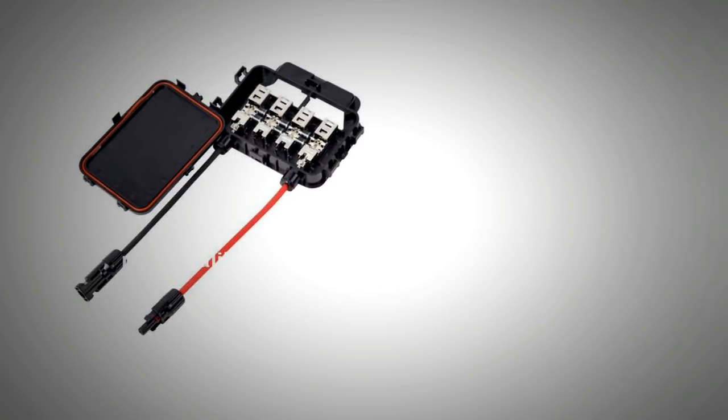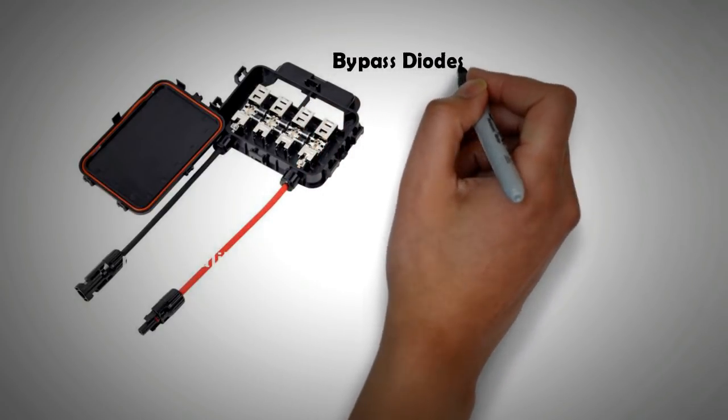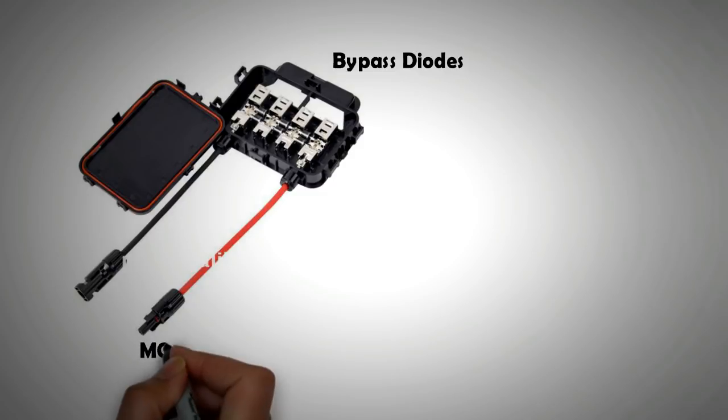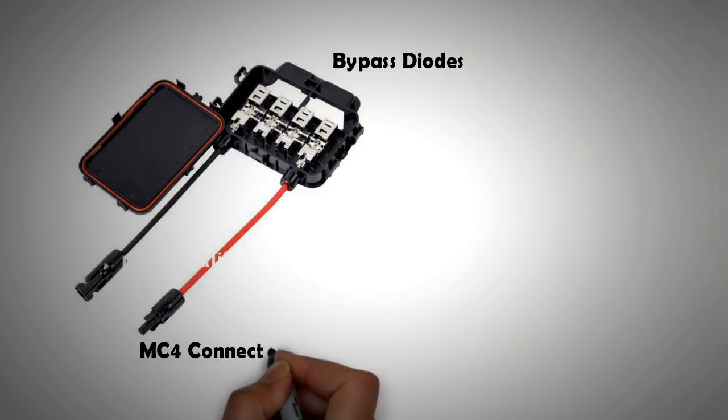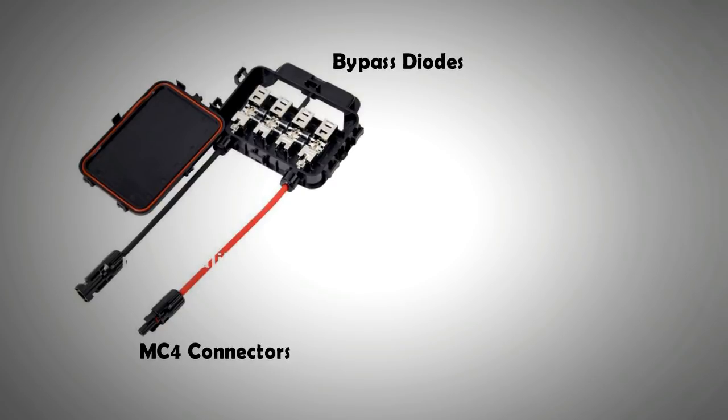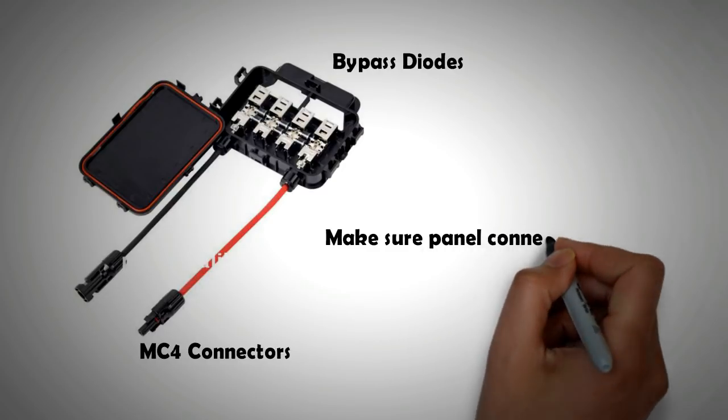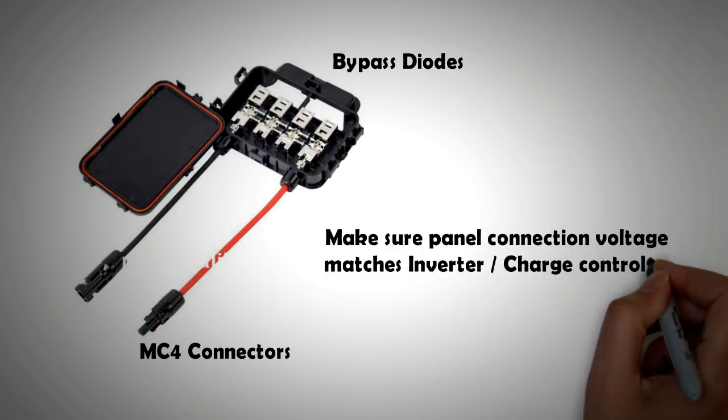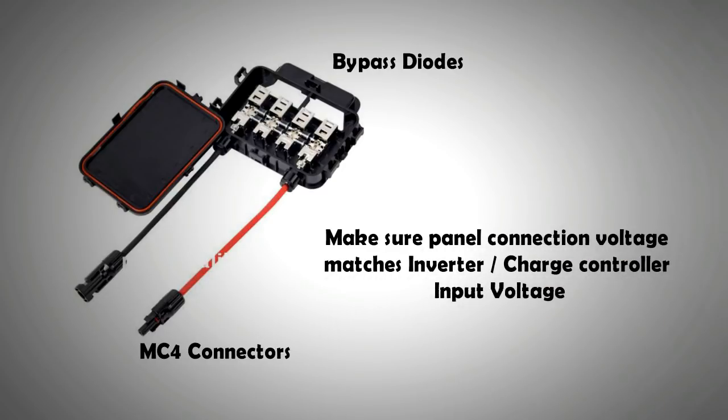Whenever you are buying a solar panel, make sure they come with bypass diode in the junction box and also with MC4 connectors, which will make your life very easy. Lastly, if you want to use an inverter or a charge controller, then please bear in mind the panel voltage. The total voltage, which will be determined by how you connect the panels, should be a value that is acceptable both to your inverter or charge controller.